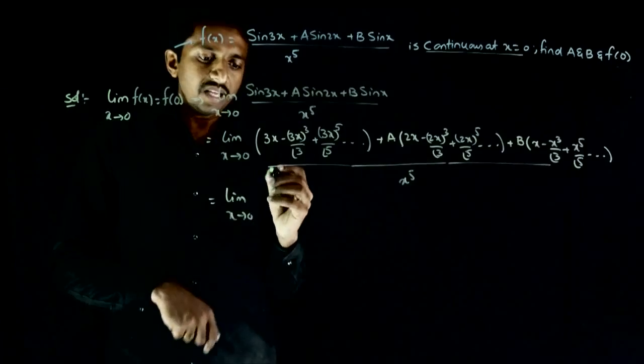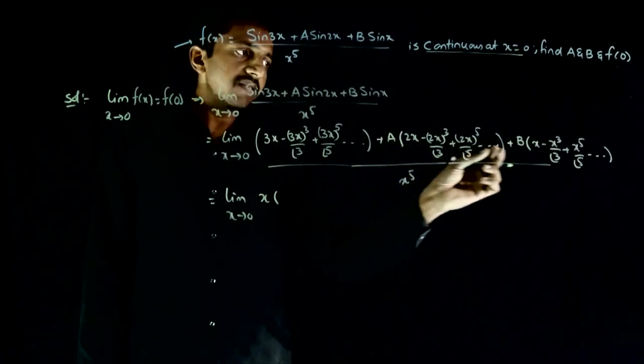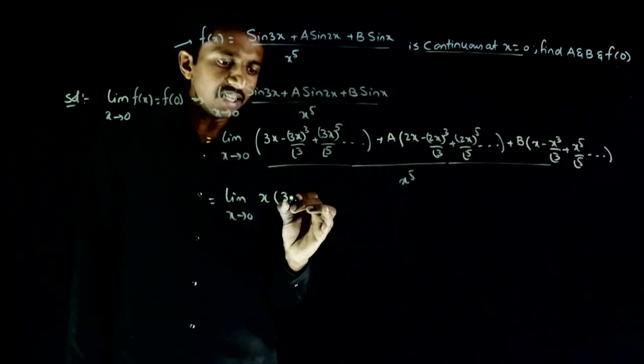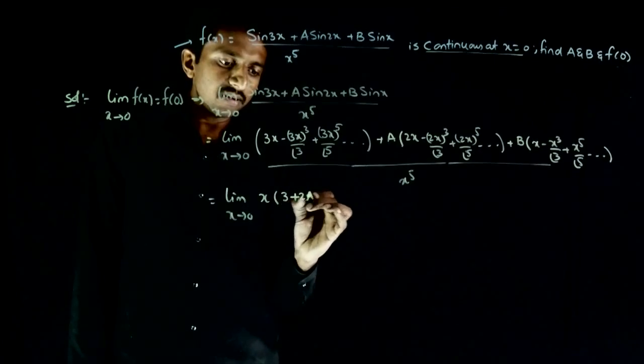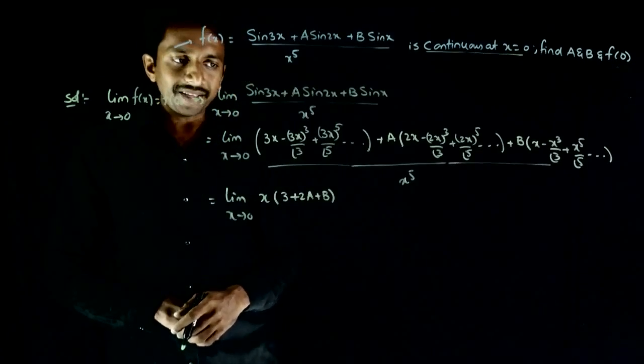In this expansion, what is the coefficient of x? You have 3x here, 2ax here, and bx here. So 3 plus 2a plus b. This is the coefficient of x.